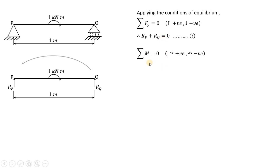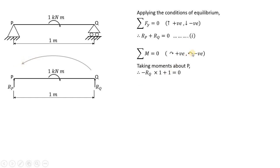Now let us apply the second condition of equilibrium: summation of moments equals zero. Clockwise moments are considered positive and anticlockwise moments are negative. Taking moment about point P, considering all forces on the right-hand side: RQ produces an anticlockwise moment about P, so it is minus RQ into 1 meter. There is also a clockwise moment of 1 kilonewton meter at mid-span, which is positive. So we get: minus RQ plus 1 equals zero, therefore RQ equals 1 kilonewton.